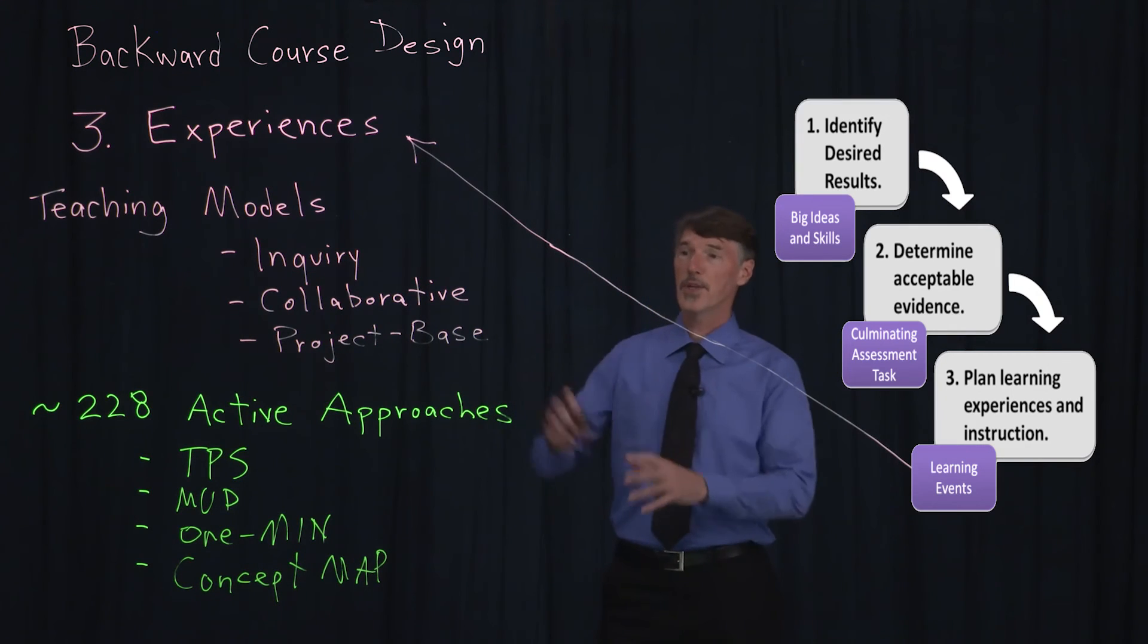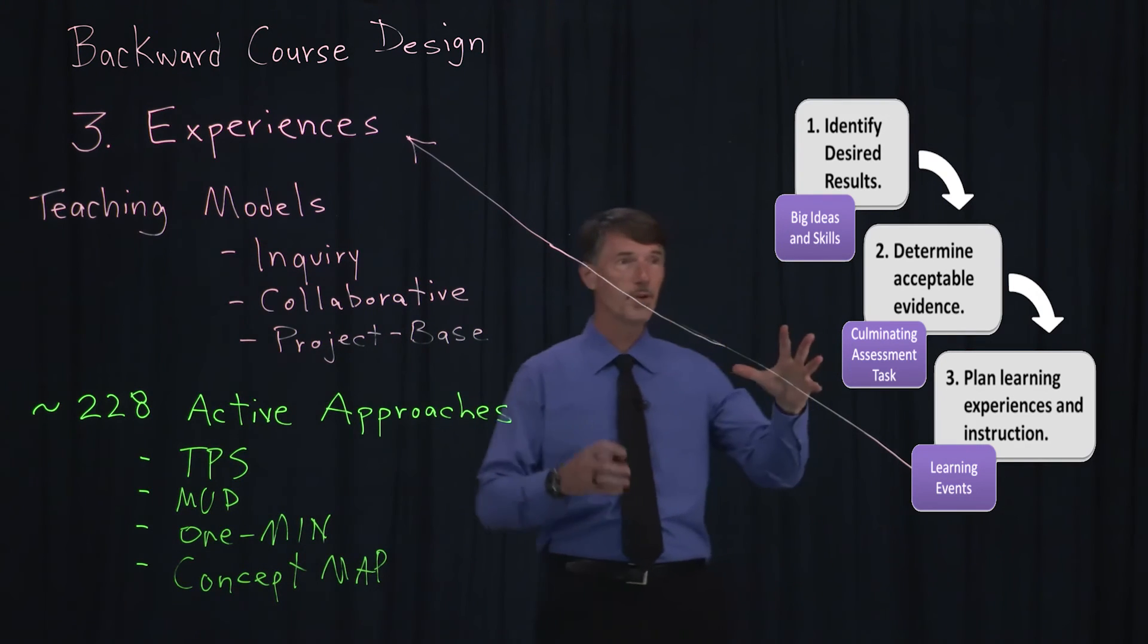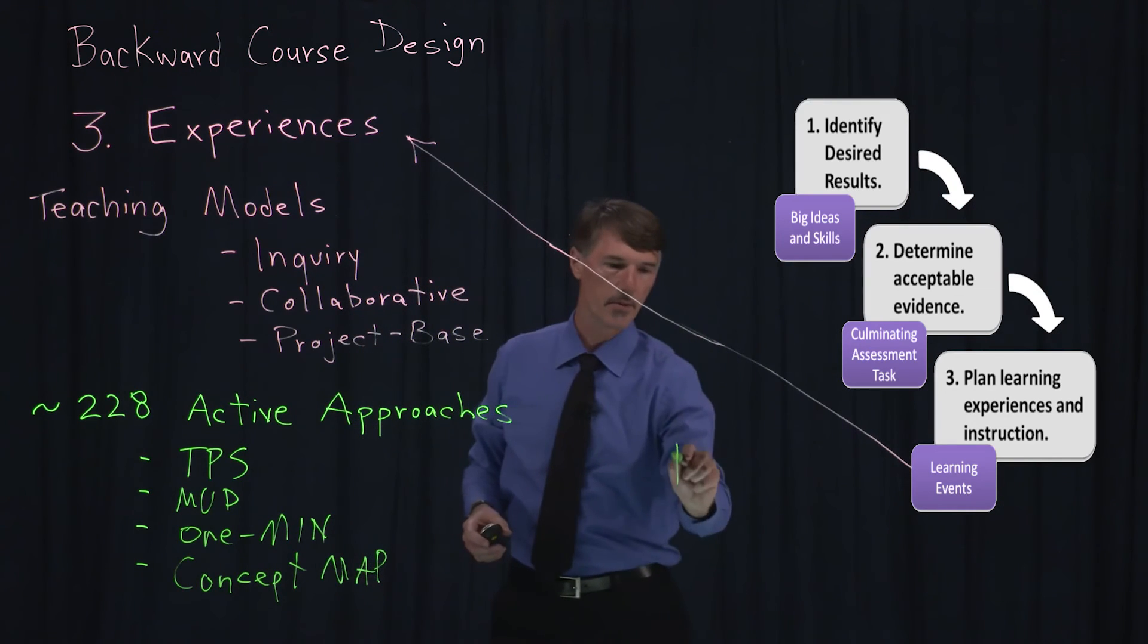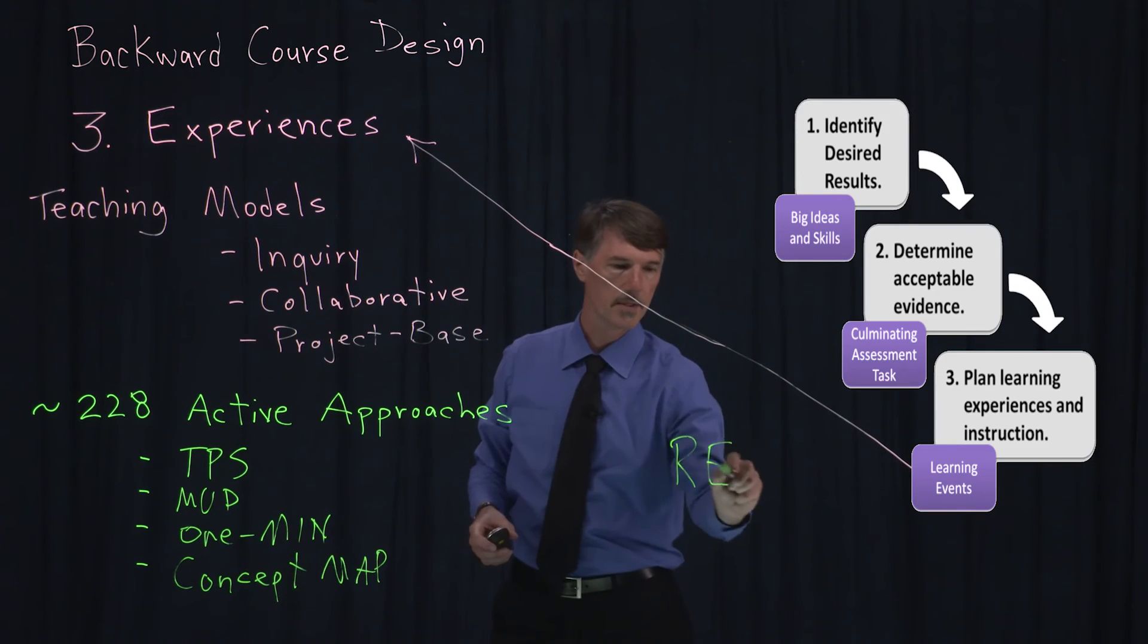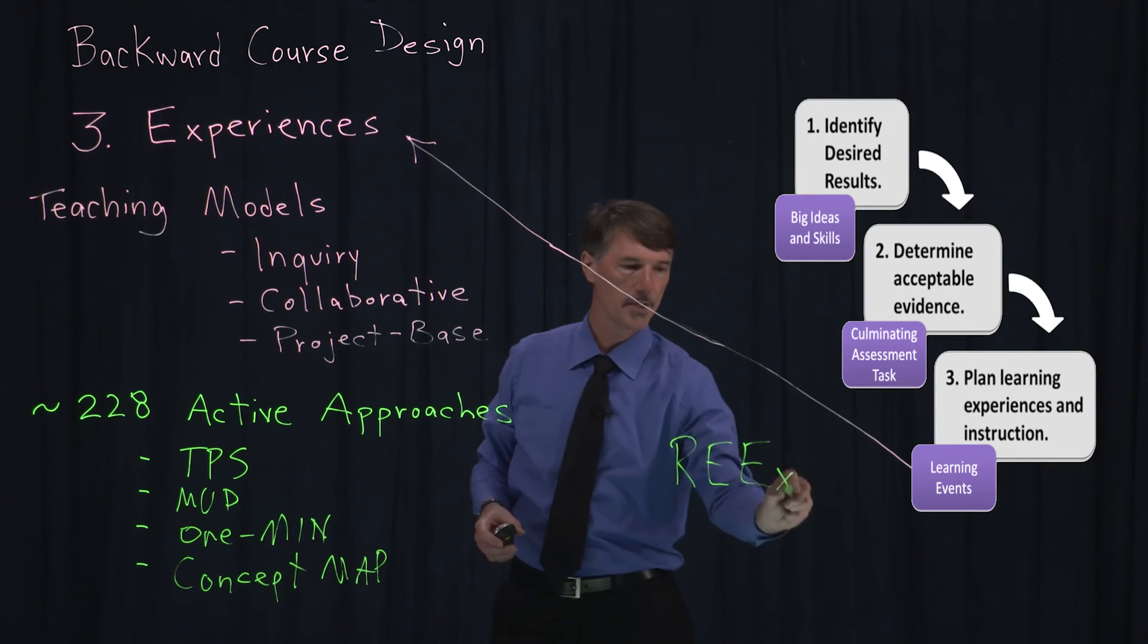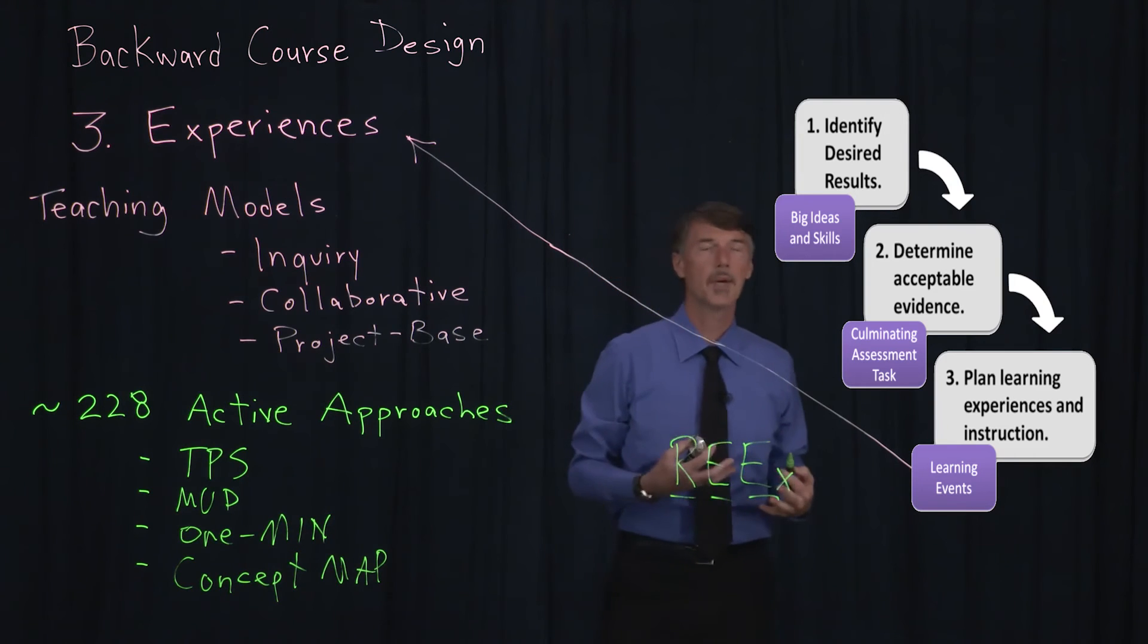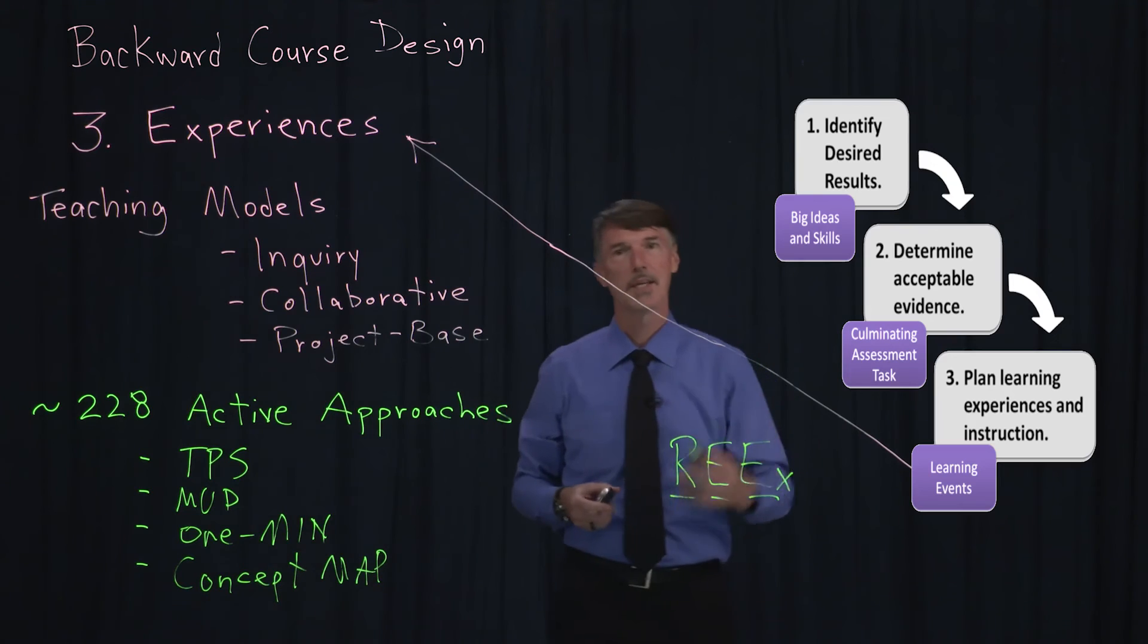So those are the three steps. In review, very quickly, looking at this model again, if there's one thing to remember, we want to remember the REICS. Results, evidence, and experience. And every time that we plan our course, we want to keep those things in mind, and we want to institute those all along the way, checking and double-checking.